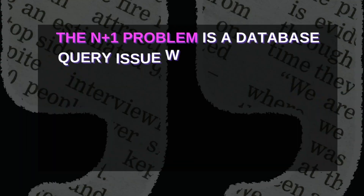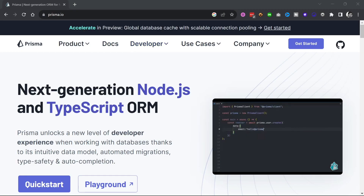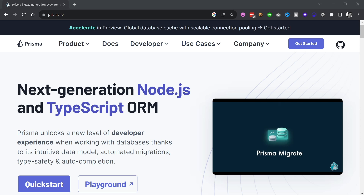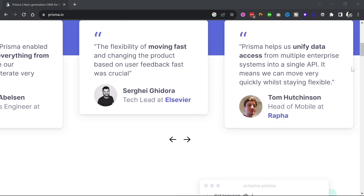There is also the N+1 problem with GraphQL. It's a database query issue where you're trying to fetch a list of entities, which requires N additional queries to get all the related data for each entity — making a separate database call for each entity can be very inefficient. There are tools to mitigate this; if you're using Node, you can use Prisma to help deal with the N+1 problem. However, you're adding extra complexity to the stack by installing yet more tools.